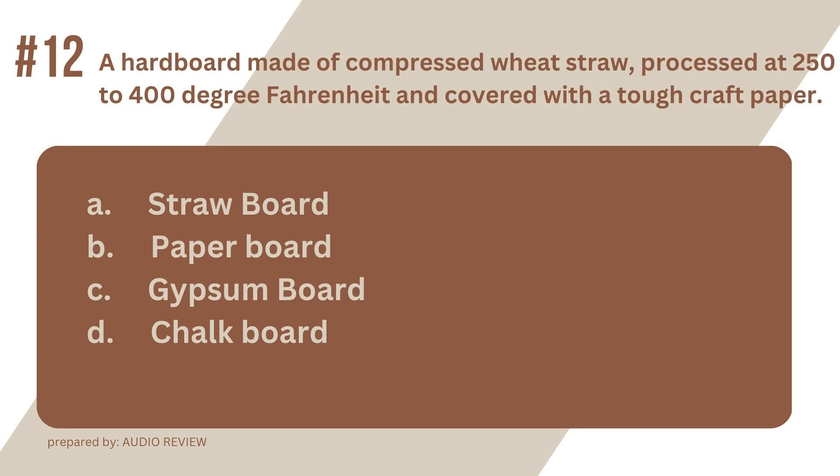Question 12. A hard board made of compressed wheat straw, processed at 250 to 400 degrees Fahrenheit and covered with a tough craft paper. A. Straw board. B. Paper board. C. Gypsum board. D. Chalk board. The answer? It's A. Straw board. A hard board made of compressed wheat straw, processed at 250 to 400 degrees Fahrenheit and covered with a tough craft paper. Straw board.